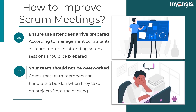Sixth, your team should not be overworked. Check that team members can handle the burden when they take on projects from the backlog. If there is too much to accomplish, the Scrum master may need to step in and reduce their tasks and responsibilities. The Scrum master's responsibility is to ensure that teams proceed at a sustainable speed. Teams who are pushed to move as quickly as possible at every sprint, or are not given enough time between sprints to recover, may burn out and either become unproductive or depart.